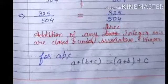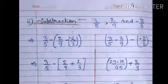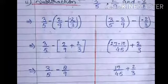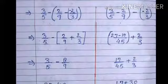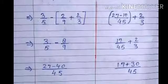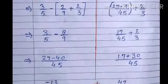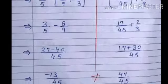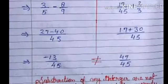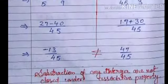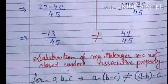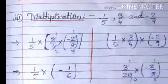Now we will check associative property for subtraction. We have three rational numbers: three upon five, two upon nine, and minus two upon three. On one side we subtract the result of (two upon nine minus minus two upon three) from three upon five, and on the other side we subtract minus two upon three from (three upon five minus two upon nine). We get minus 13 upon 45 and 47 upon 45 respectively, which are not equal. So subtraction of any three integers is not closed under associative property.